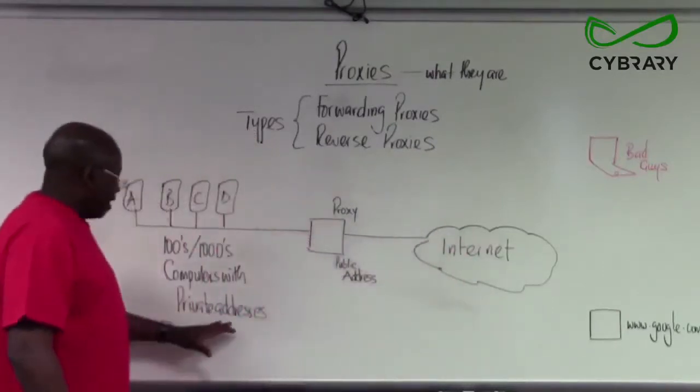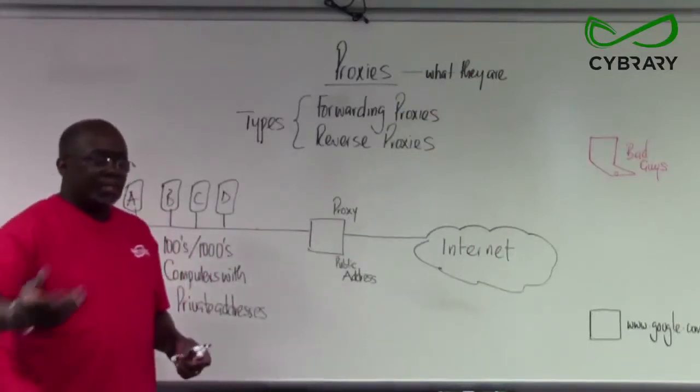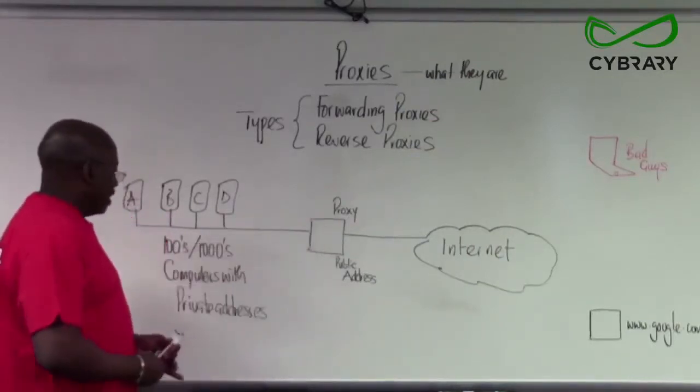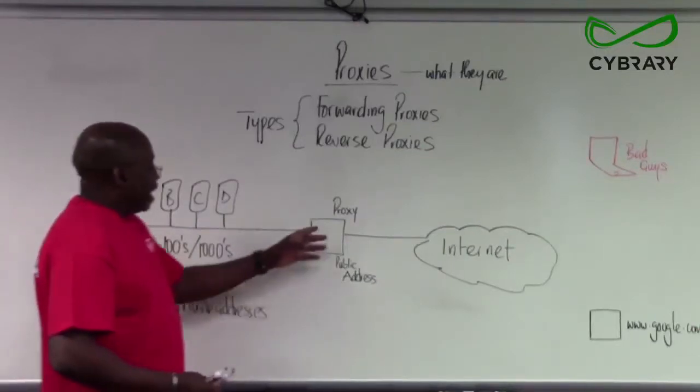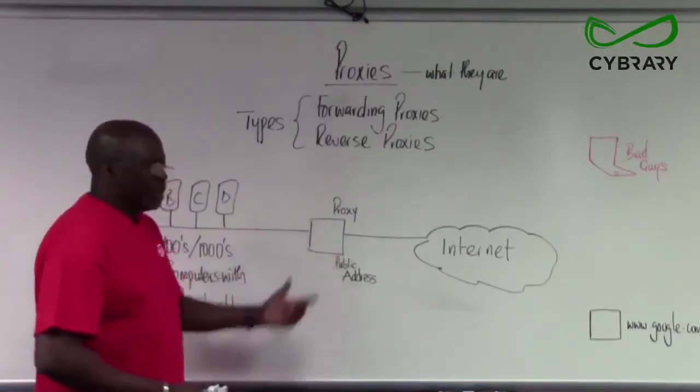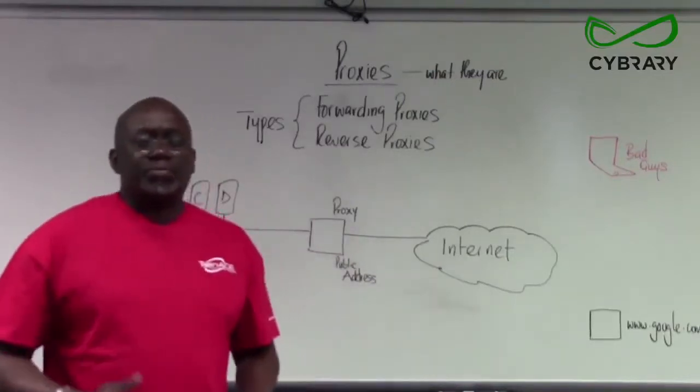The private addresses cannot go through the internet because these private addresses could also be in use by another organization on the internet. On another part of the world, the idea is we have a proxy in place. Usually when organizations seek an address, a public address from the service provider.